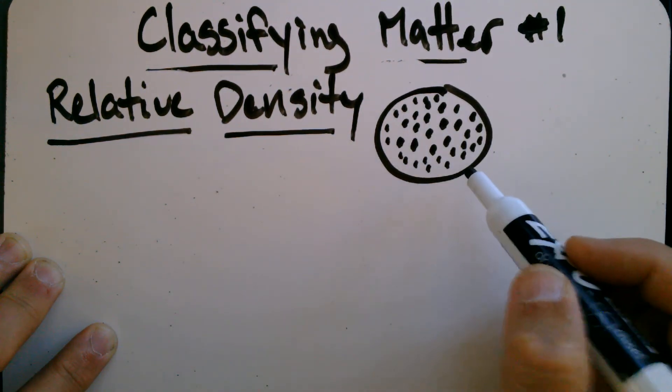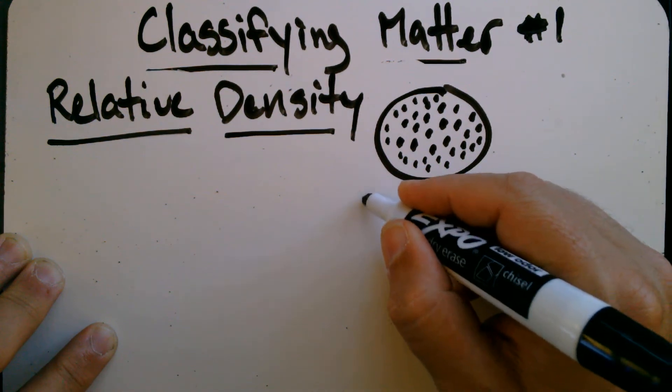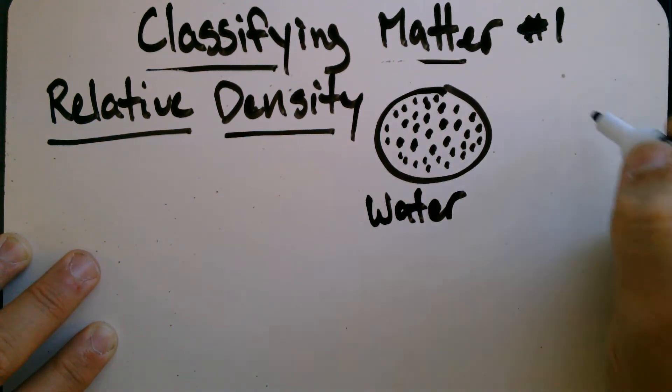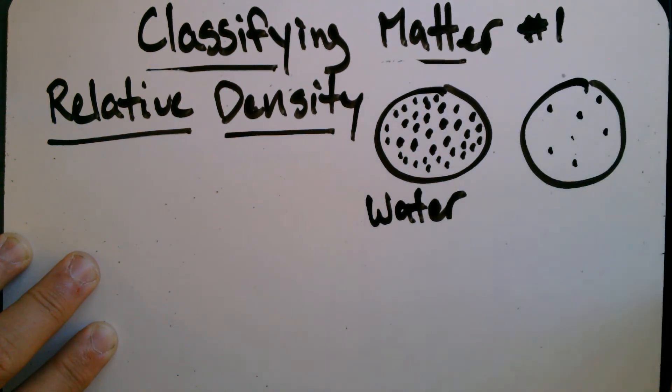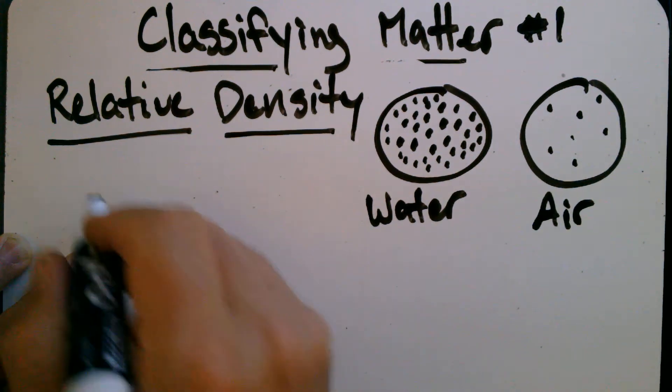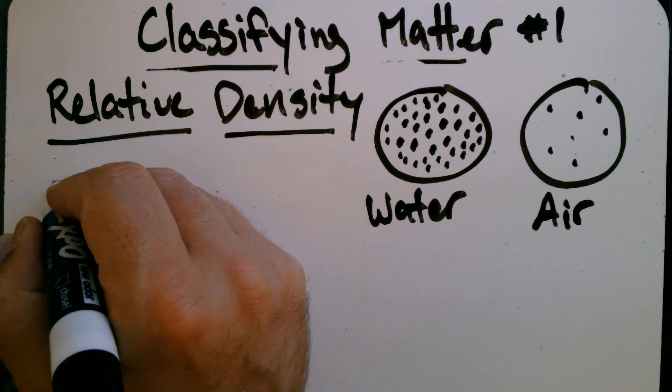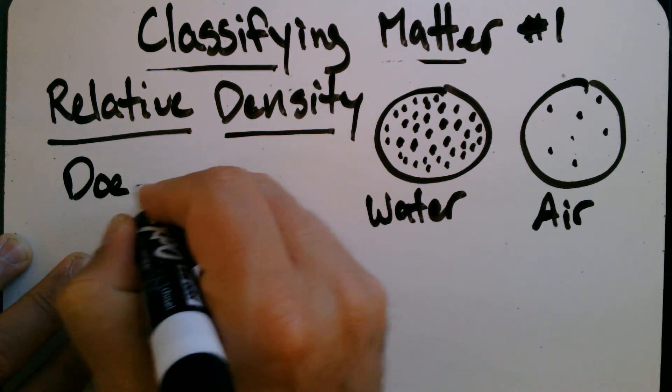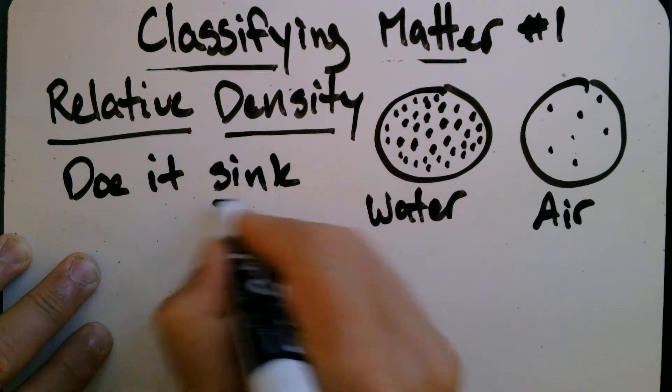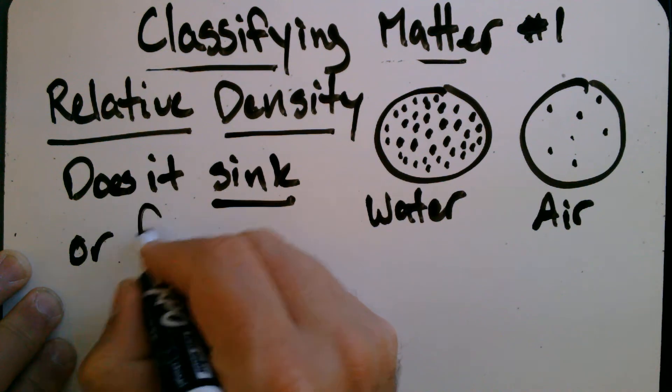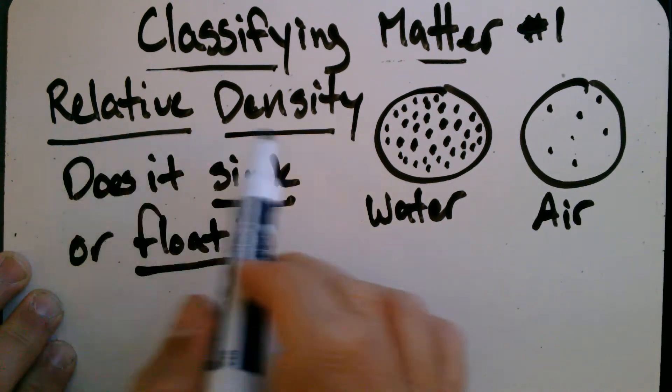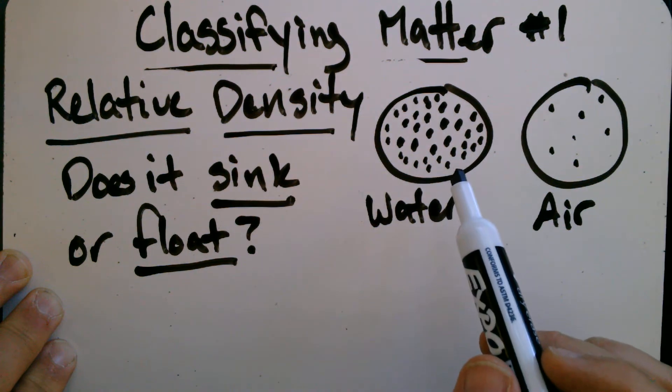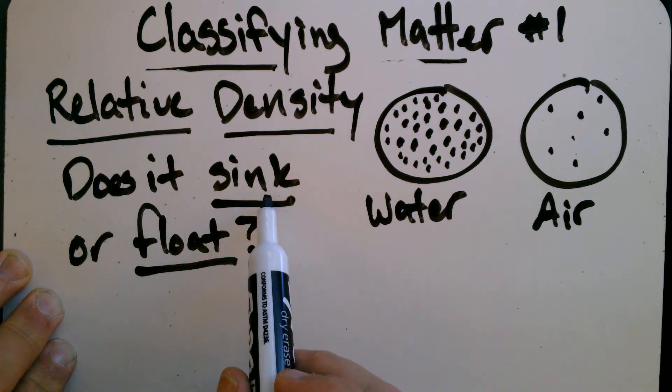So, if we have two substances, and let's just say this is water. And then we have another substance, and the molecules are more spread out. And let's say this is air. Remember, relative density is just really this simple question. Does it sink or float? So, even though this sounds really complicated, and even density itself is pretty complicated as well. But all you really need to know is, does it sink or does it float?